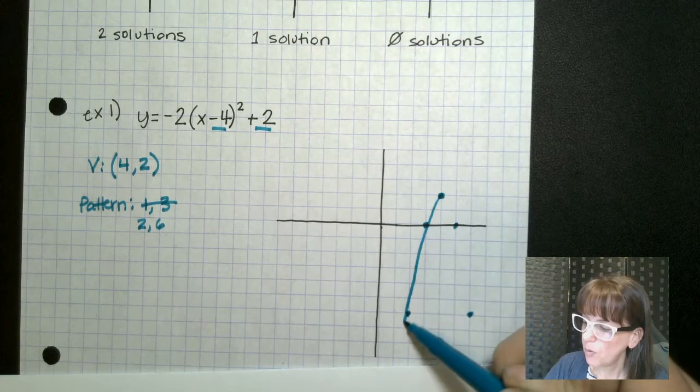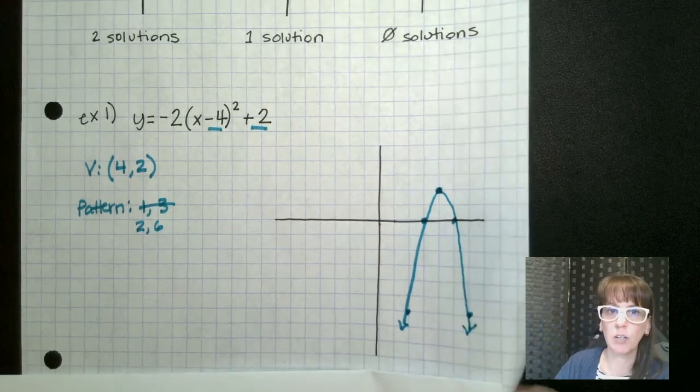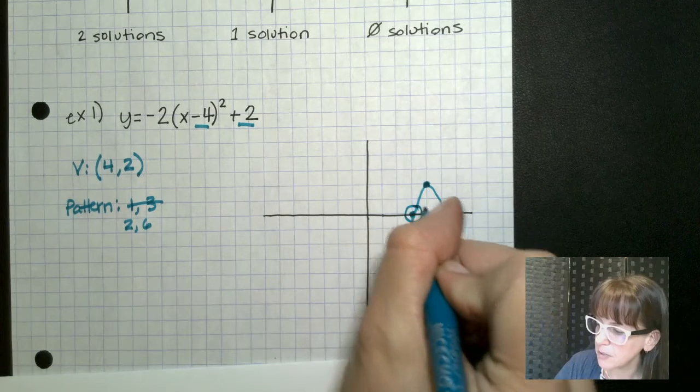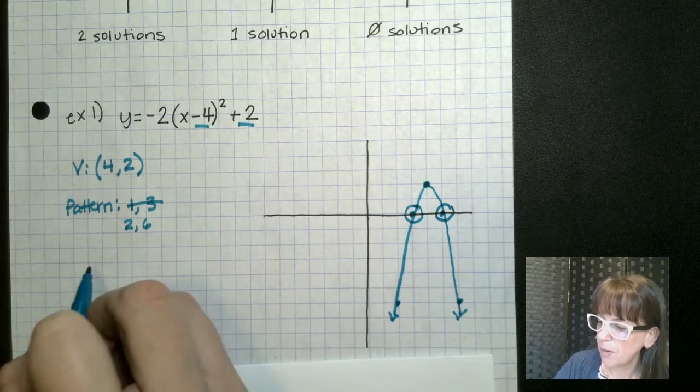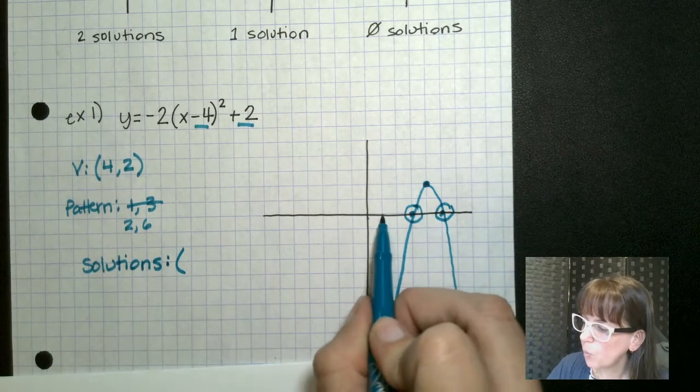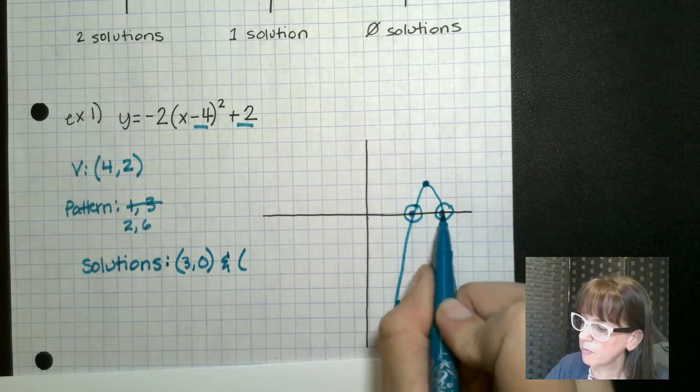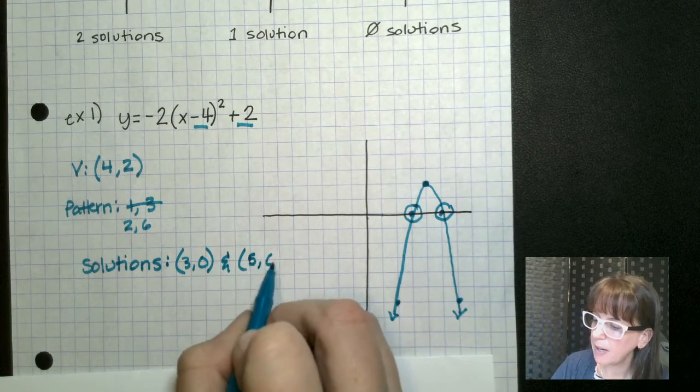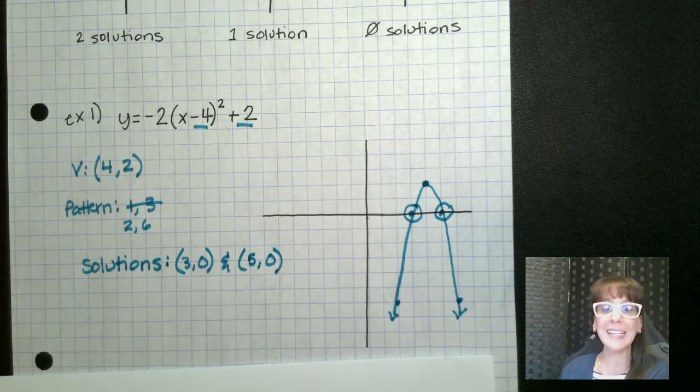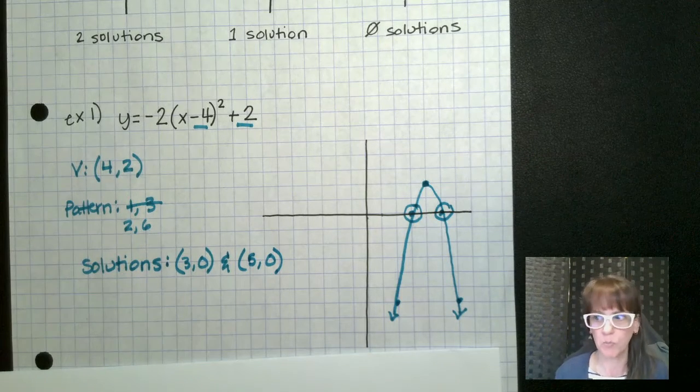Now this would be a case of having two solutions for this guy right here. And sure enough, those solutions are this right here. So our solutions are three and five is where it crosses on our x-axis. So those would be our solutions, AKA our x's, AKA our x-intercepts, our roots, or any one of those, our zeros.